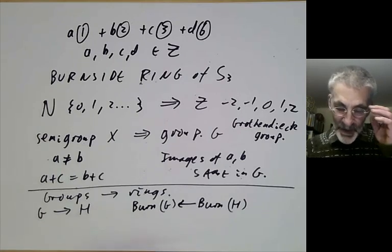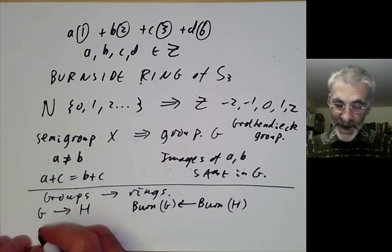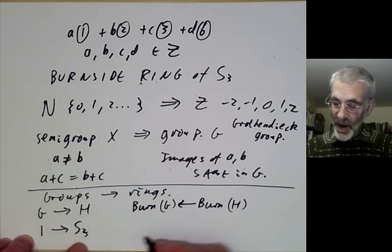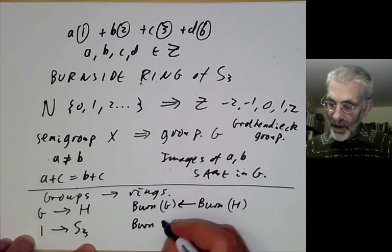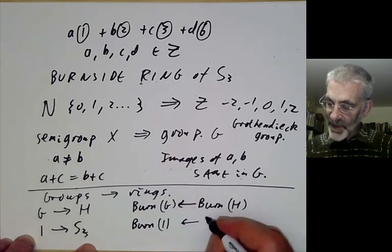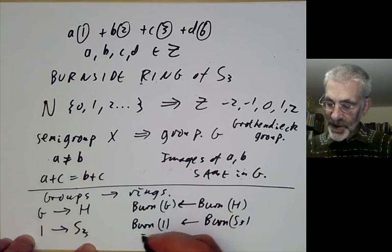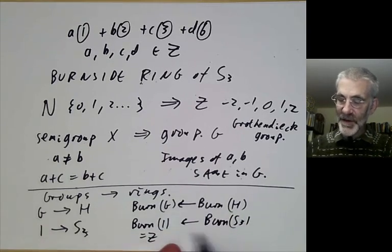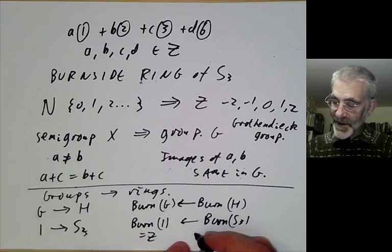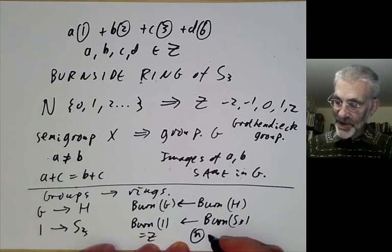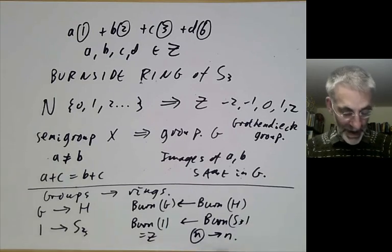For example, if we take the map from the trivial group to S3, we get a map from the Burnside ring of S3 to the Burnside ring of one, which is just the integers. It's obvious what this map does - it just takes the basis element n for n = 1, 2, 3, or 6 to the number n, which is why I called it n.